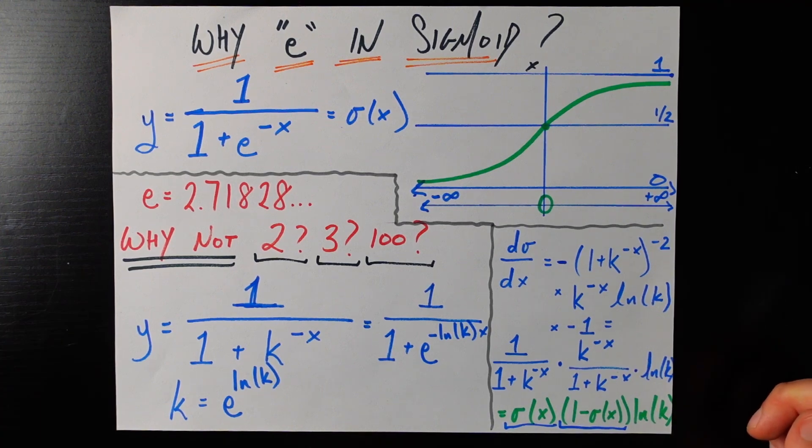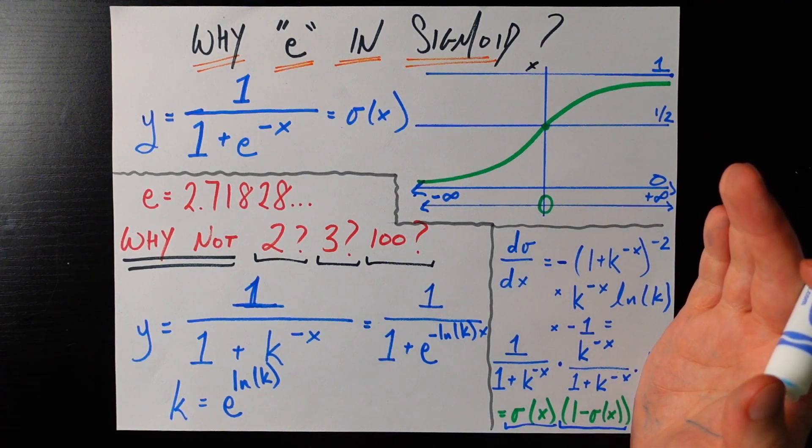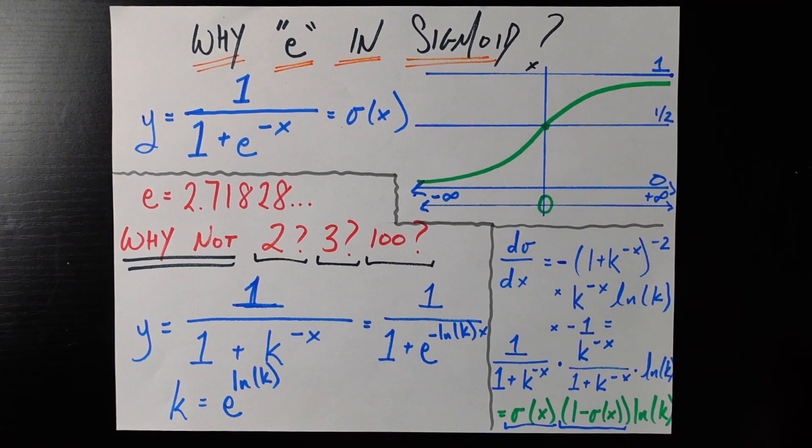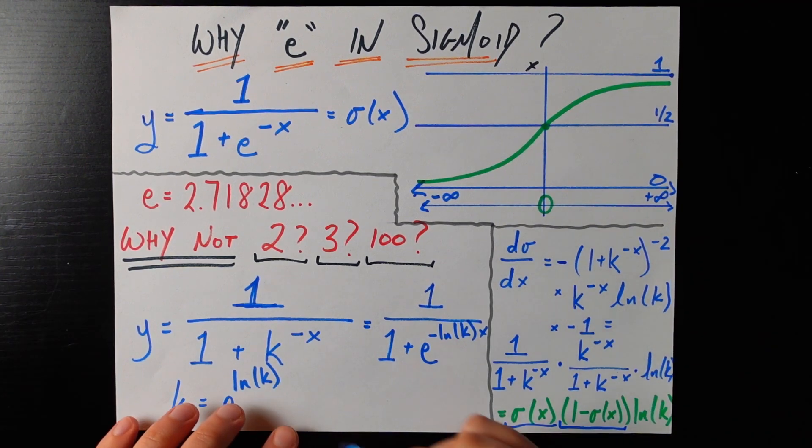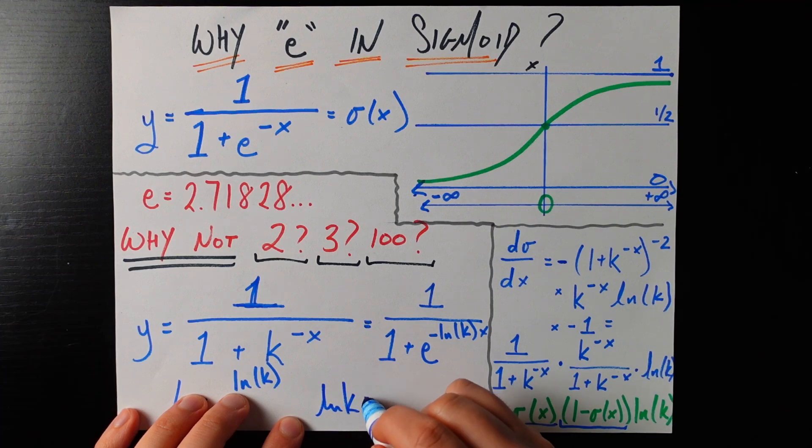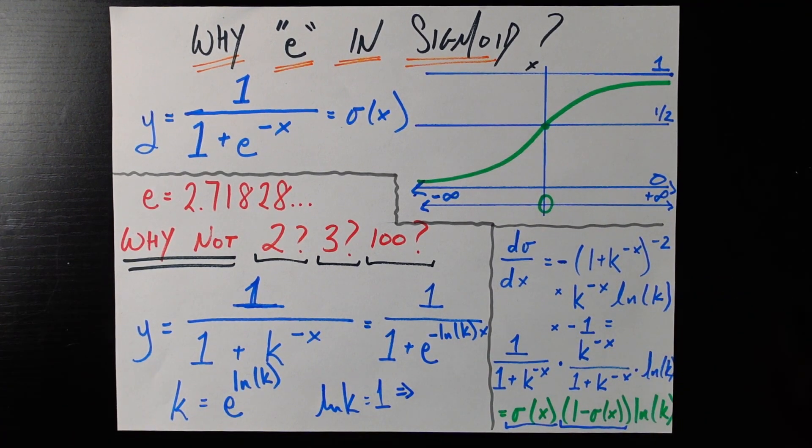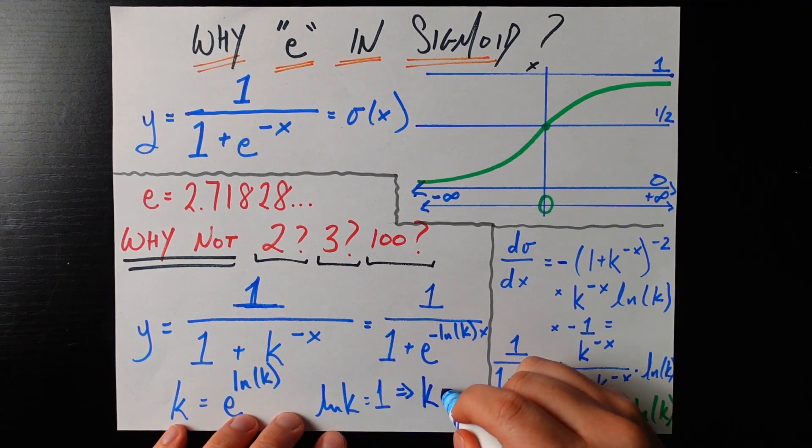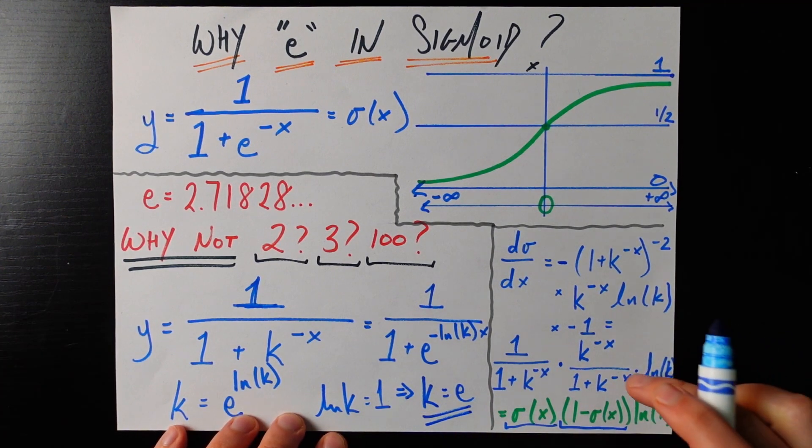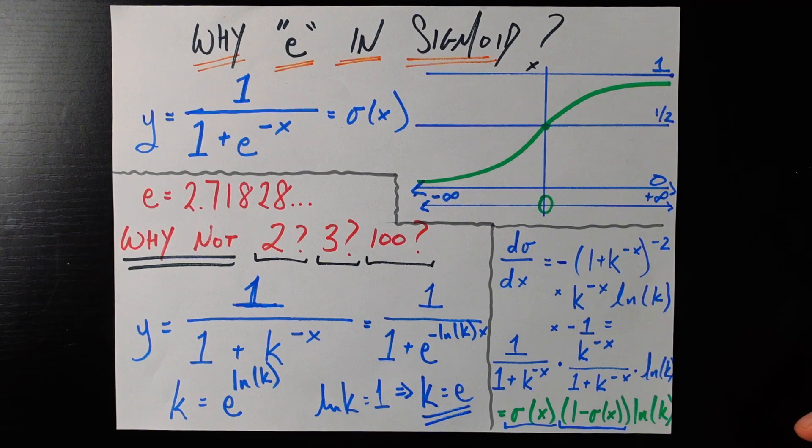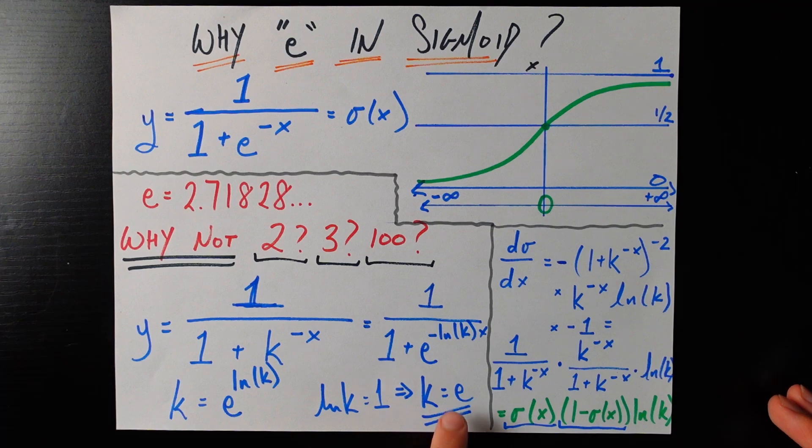This sure would look a lot nicer and a lot cleaner if we didn't have that ln k and if we don't want that ln k then it should be equal to 1 and if we enforce that ln k is equal to 1 then a very simple doing e to the power of both sides gives us that k should be equal to e. So to make the derivative a little bit nicer and we just have to write sigmoid times 1 minus sigmoid which is a very nice shortcut that we can get away with a lot we can get away with that and not have to worry about this constant if we just set k equal to e.